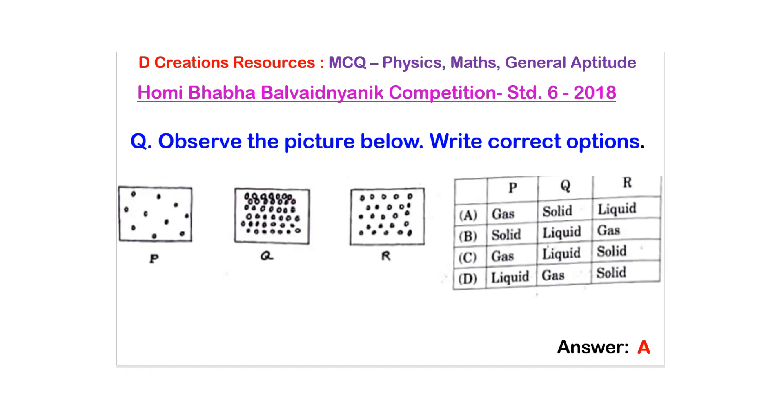So as you can see what is the difference between these three? Well the number of circles that you see inside them are different and here you can say that these are actually molecules. So you see that the number of molecules are least in case of P, they are little more in case of R and they are maximum in case of Q.